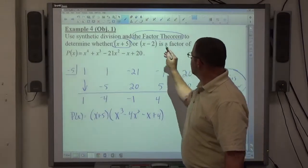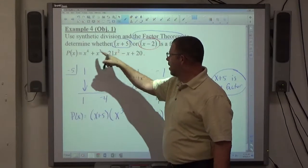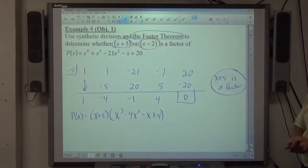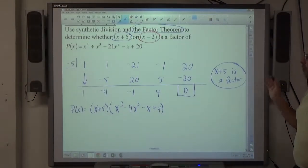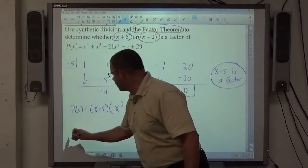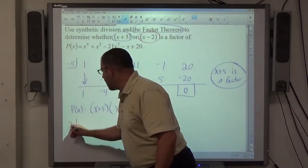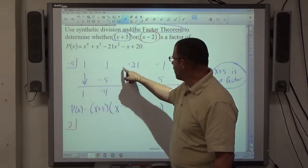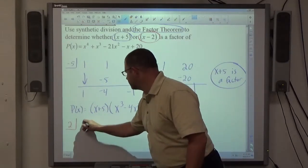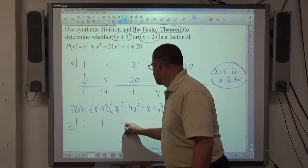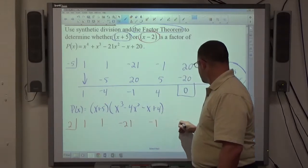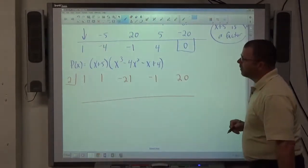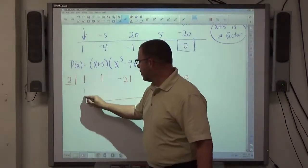Moving on to the second factor option. x to the 4th can have up to 4 factors. So just because x plus 5 works doesn't mean x minus 2 can't work. We're going to perform the same task here. Synthetic division. We're divided by x minus 2, so I put a positive 2 in the slot there. I'm going to put this polynomial up here in. Alright? And then again, perform the synthetic division with that polynomial.